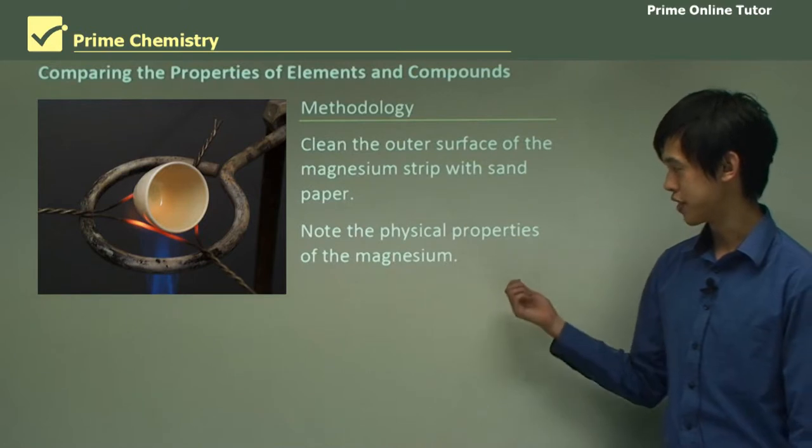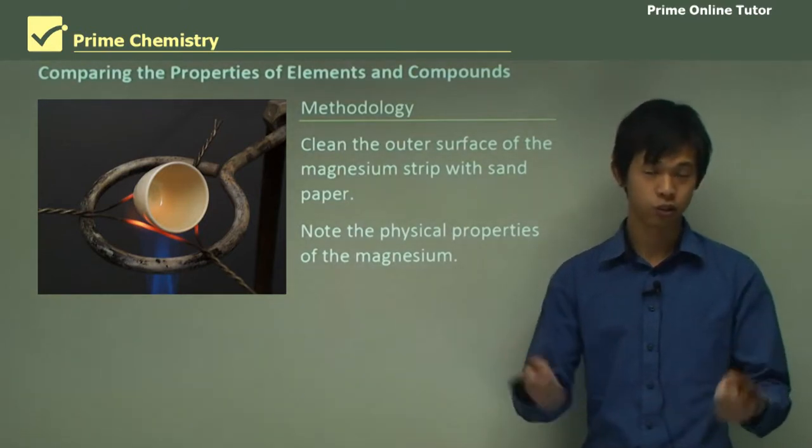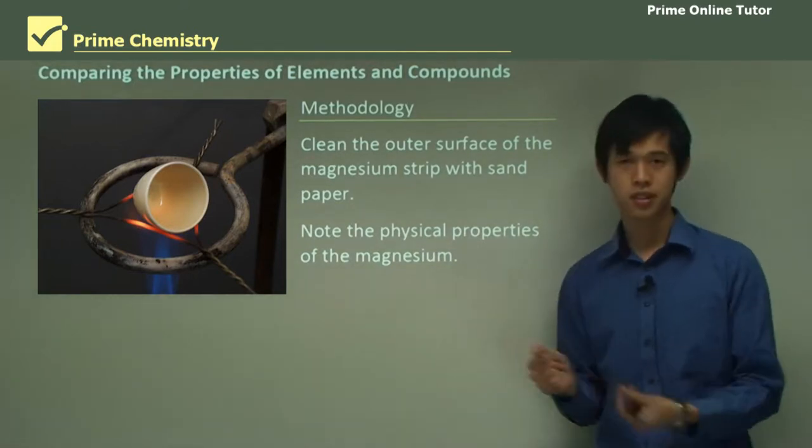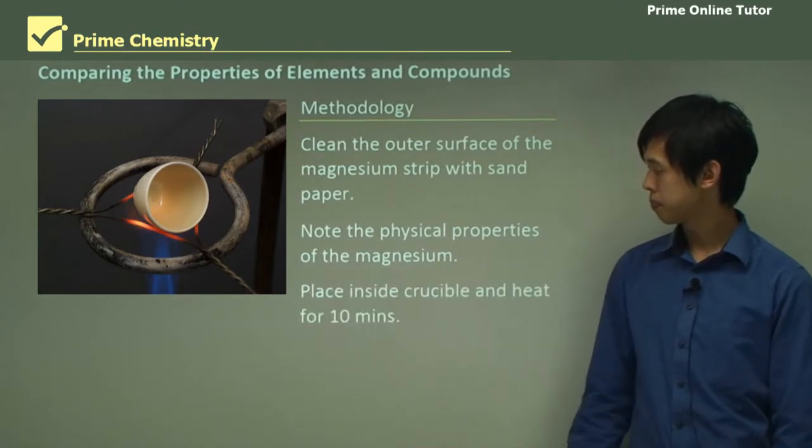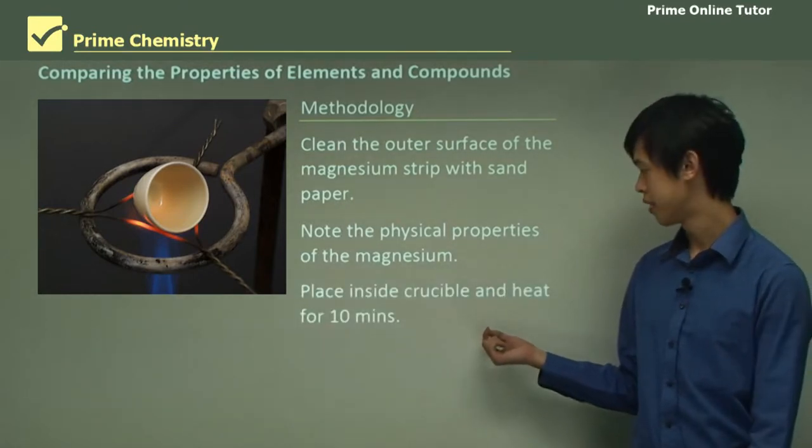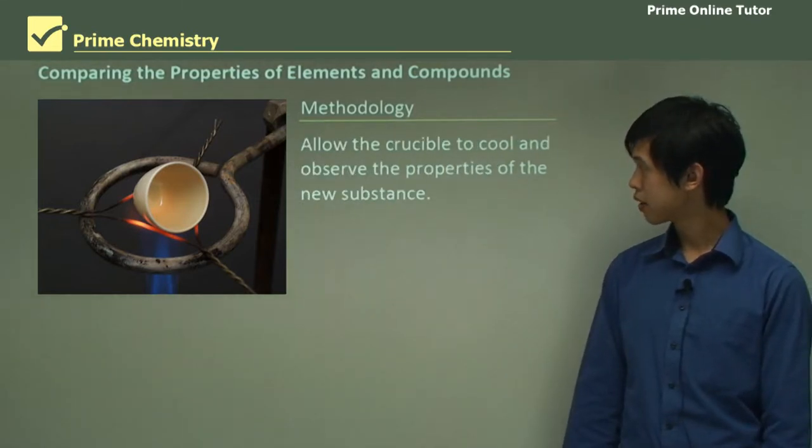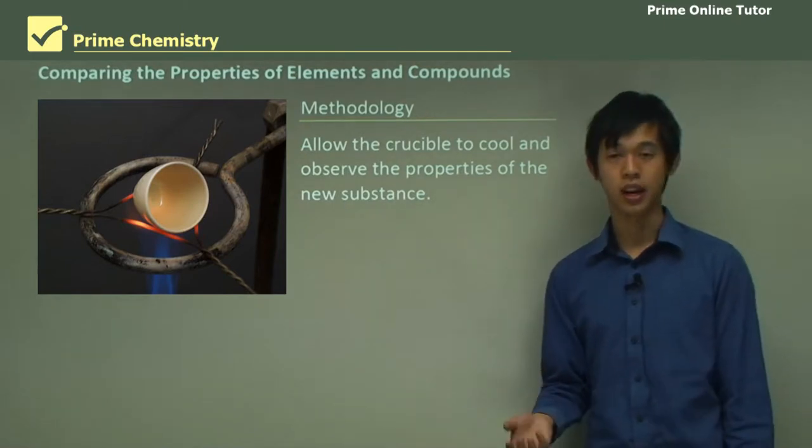And then we note the physical properties of magnesium. Look at its malleability, look at its electrical conductivity, all of its physical properties, and note them down before we do anything else. Then we place inside the crucible and heat with the Bunsen burner for 10 minutes. Allow the crucible to cool and observe the properties of the new substance.